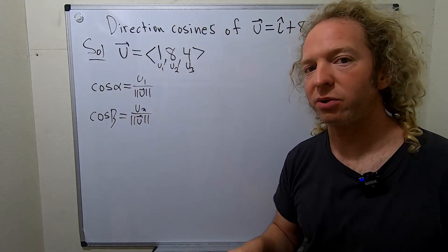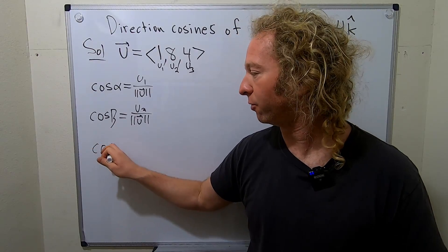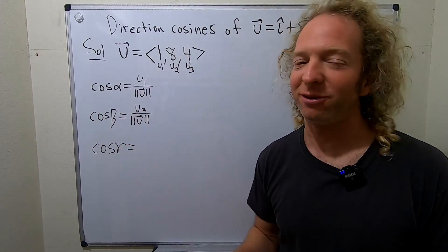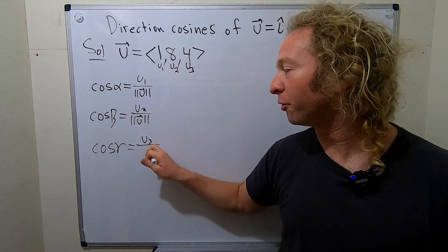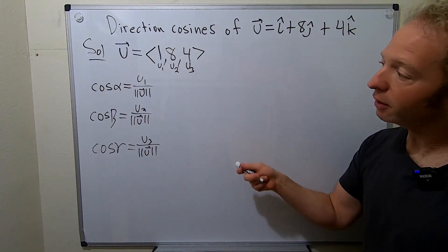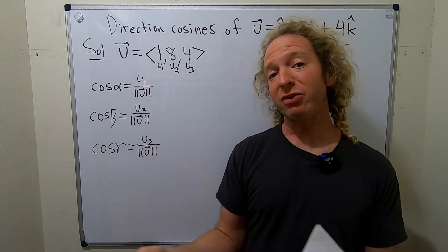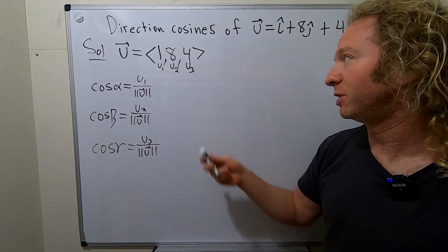That's the second direction cosine. And the last one will be cosine of the beautiful Greek letter gamma. I love Greek letters. u3 over the magnitude of u. Good stuff. All right, so all we've got to do now is figure out these magnitudes, and we got this. We just plug everything in, and we have the direction cosines.